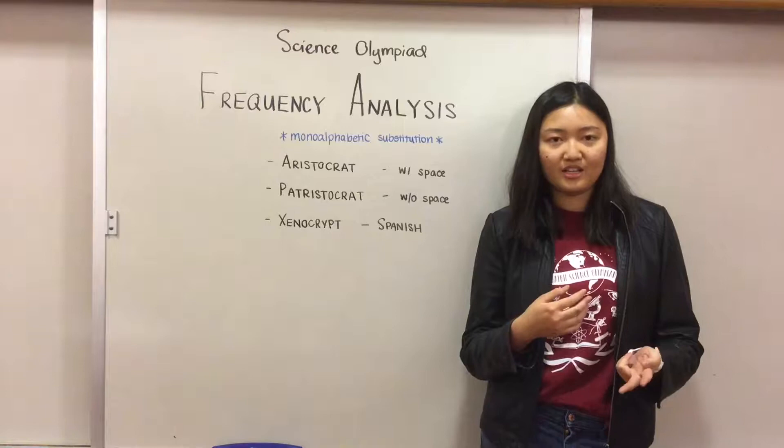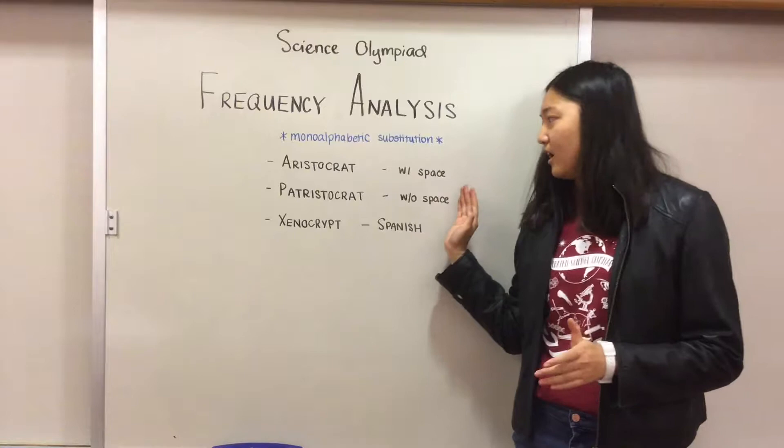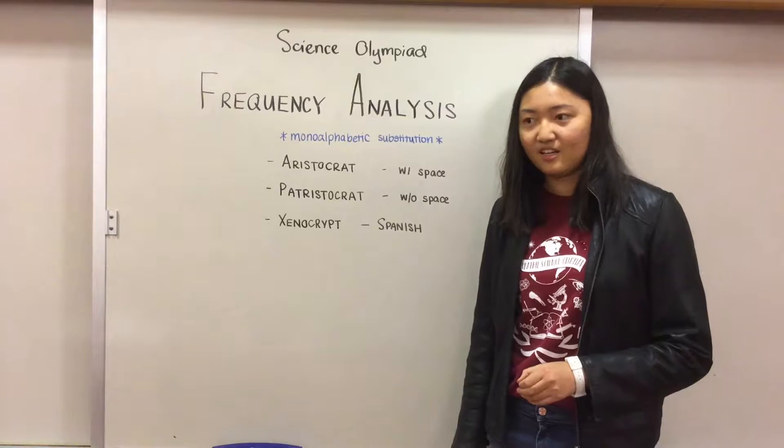Basically, there's not going to be one letter that maps onto two or two letters that map onto the same one. So in which case, it'll be very helpful for aristocrats, patristocrats, and xenocrypts when it comes to Science Olympiad codes that are tested this year.